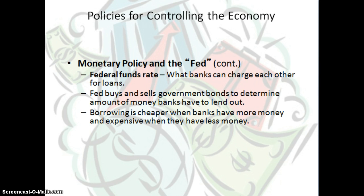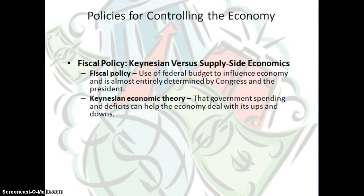Now let's look at fiscal policy and how that relates to John Maynard Keynes. Fiscal policy is the use of the federal budget to influence the economy and is determined by Congress and the president. We know that the president suggests a budget to Congress, Congress then has the ultimate say, and then it is the job of the president to sign off on and approve the budget.